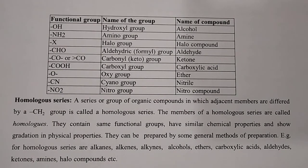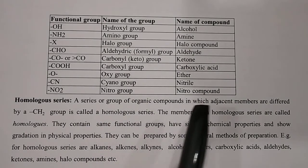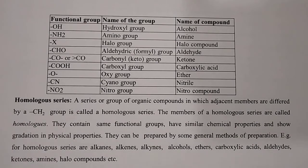The next topic is homologous series. A homologous series is a series or group of organic compounds in which adjacent members differ by a CH2 group. For example, the homologous series of alkanes is: methane, ethane, propane, butane, pentane, hexane, heptane, octane, nonane, decane. The difference between methane (CH4) and ethane (C2H6) is CH2.